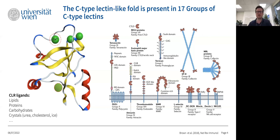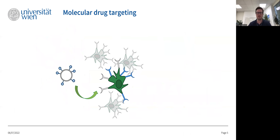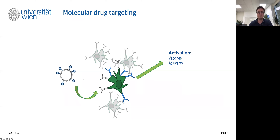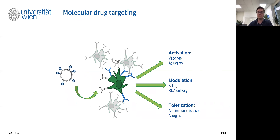From a molecular drug targeting perspective, what we would like to do is develop small molecules that bind specifically to one subset of cells mediated by these C-type lectins and their specific expression on cell surfaces, allowing the delivery of novel vaccines or adjuvants for treatment of autoimmune diseases or allergies, siRNA delivery, or targeted killing of a certain cell subset.